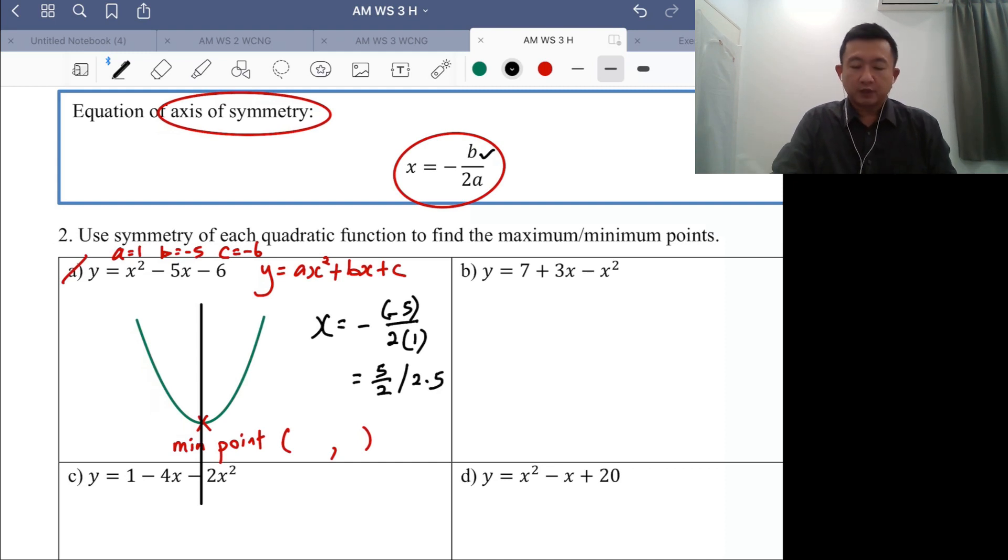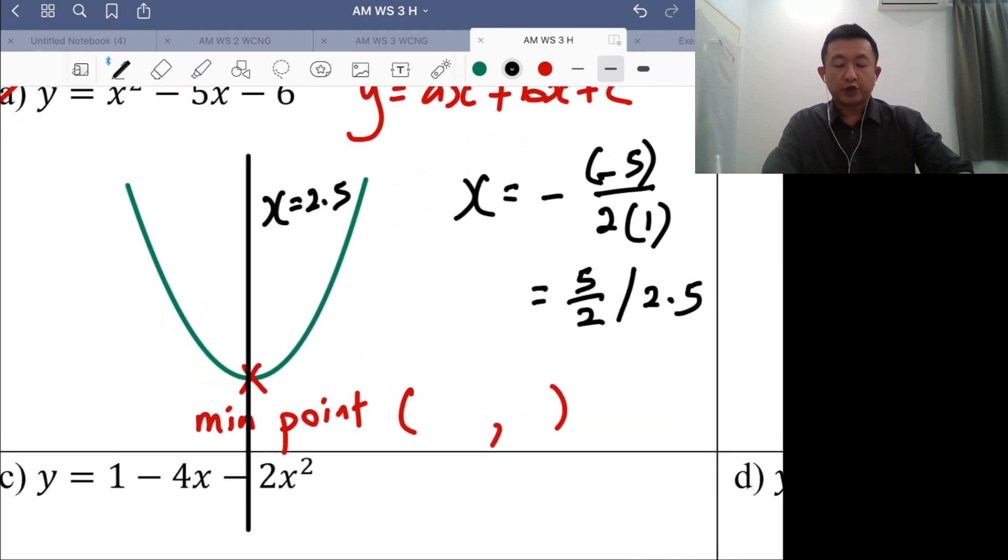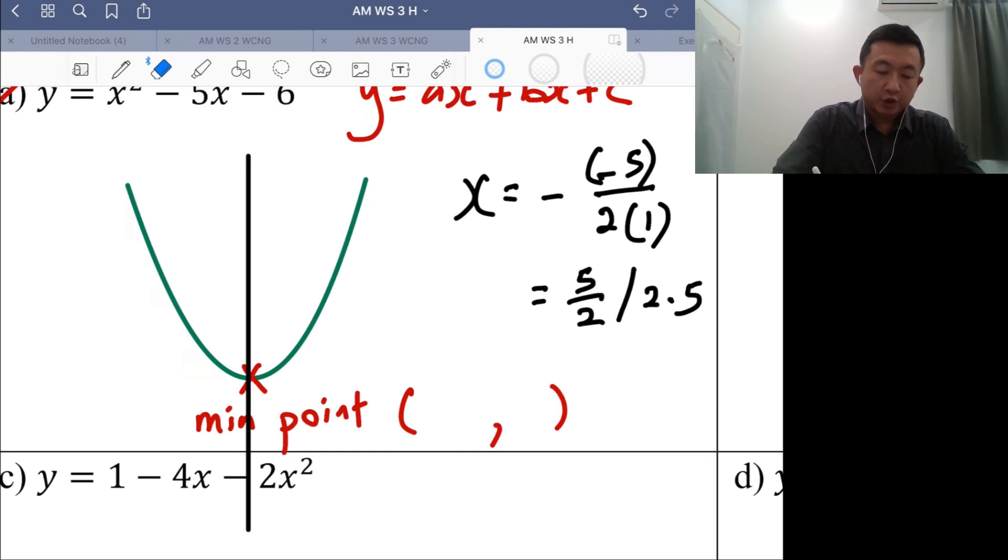But you know that this line, you will have the equation of x equals 2.5. And why is it so? Why is the equation x equals 2.5? Because when you get any of the coordinates belonging to this vertical line, all of the x values will share the same thing.